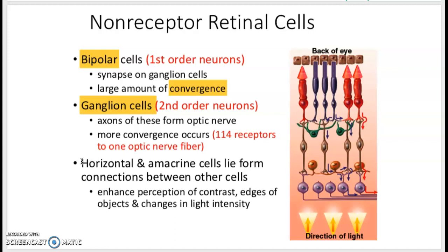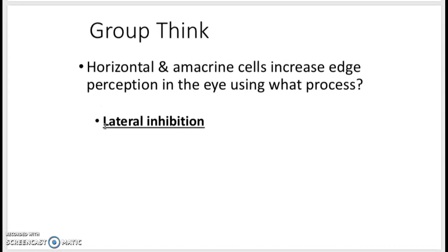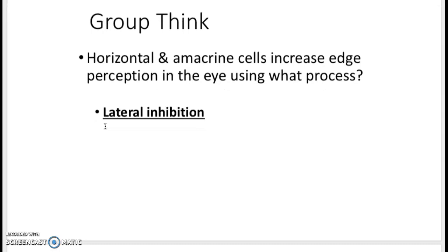Horizontal and amacrine cells form connections between other cells and that allows the contrast to be increased so you can see edges of objects better. So horizontal and amacrine cells increase edge perception in the eye using what process? Pause, think about it, and I'll show you the answer in a second. They use that process of lateral inhibition where we're inhibiting either neuron on the side of the stimulation.